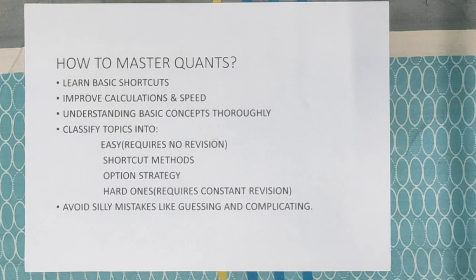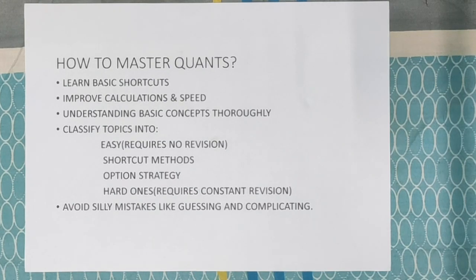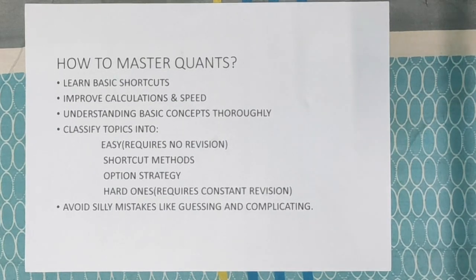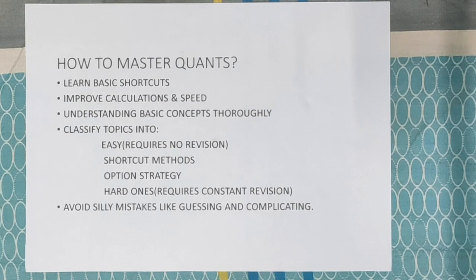Quantitative aptitude is not actually that difficult. If you don't know the logic, that is an issue — but most mistakes are just careless errors. For example, in time, speed and distance, if you misread the question, you will get the wrong answer. Reading the question carefully and answering it correctly is the best approach.